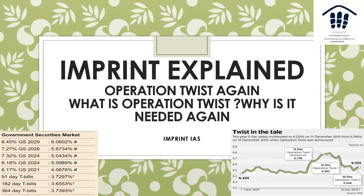The government doesn't have money on its own — it is actually borrowing from the RBI. What it does is that it actually issues some bonds which are known as government securities, and these are of different time frames. So there'll be a 364-day treasury bill, a 182-day treasury bill, a 90-day treasury bill, a five-year bond, a three-year bond, or a 10-year bond.